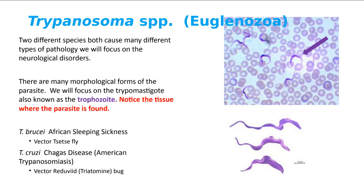The trophozoite is going to be in blood, on the outside of the blood cells, not on the inside. If you were to pull it out and straighten it, it would be the size of three erythrocytes. That's probably what I'll tell you on the practical — this is the size of three erythrocytes — and you should think, that's a trypanosome.